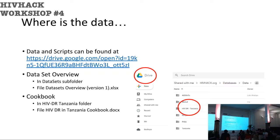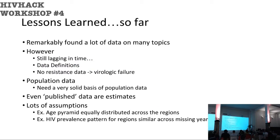There is a file called 'Dataset Overview Version 1' which describes the whole structure of the dataset, the variables, the folder structure, and where to find what. There's also a document called the 'Cookbook,' which documents how I went from A to B, and what assumptions I took along the way. Lessons learned so far: it's quite remarkable how much data I found — which is a good thing.